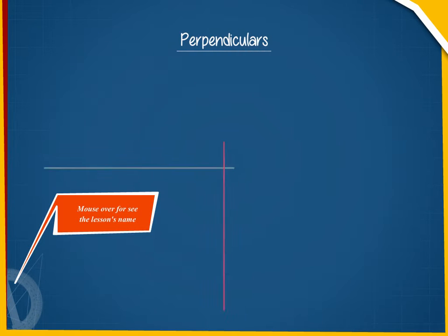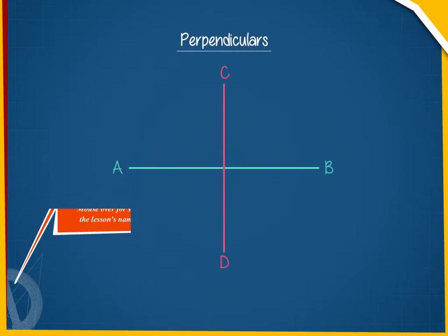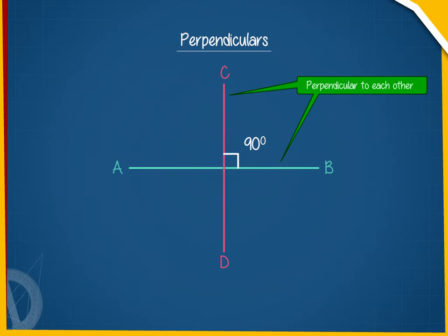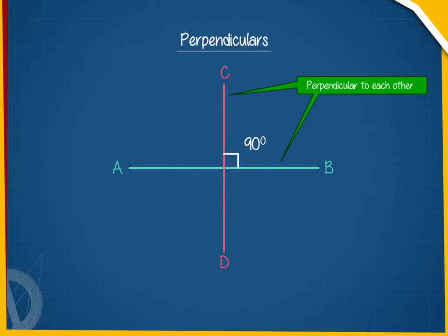Perpendiculars: When two lines or line segments form an angle of 90 degrees, they are called perpendiculars to each other. Here, AB and CD are perpendiculars to each other.